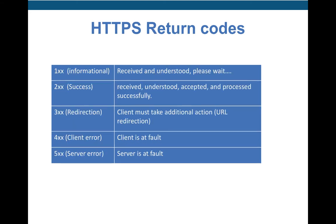These are the HTTPS return codes — status codes used to report success or failure of a RESTCONF operation, acting as acknowledgements to the client. A 1xx status code means the request is under processing by the server. 2xx indicates the client's request was accepted and processed successfully. 3xx is a redirection requiring the client to take additional action. 4xx indicates a fault at the client, and 5xx indicates a fault at the server.